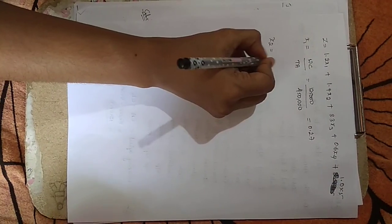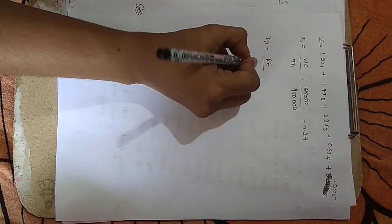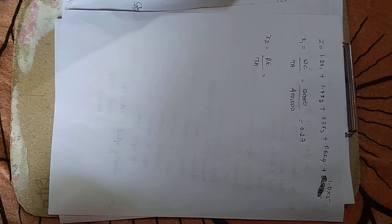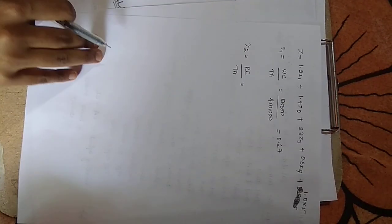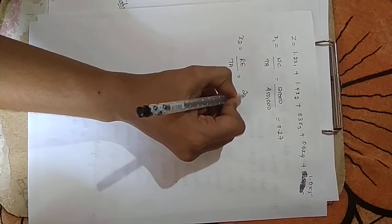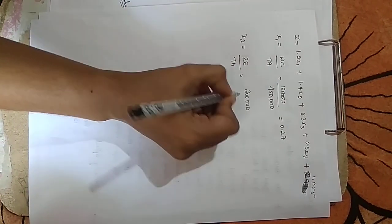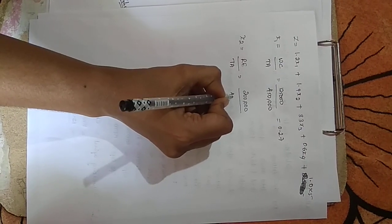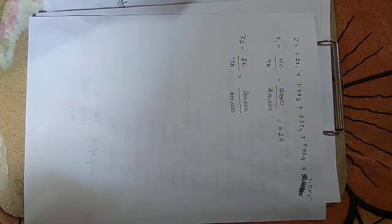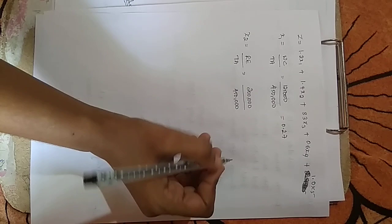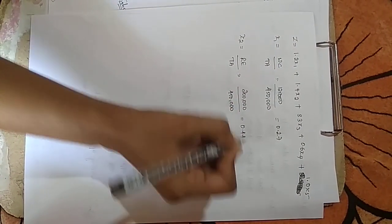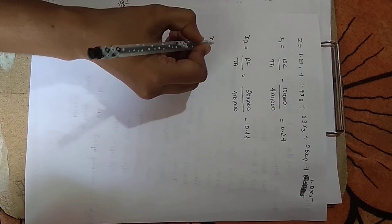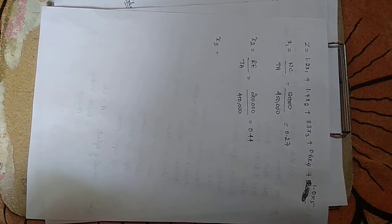Next, X2 is retained earnings divided by total assets. Retained earnings are 2,00,000 and total assets is 4,50,000. So 2,00,000 divided by 4,50,000 gives an answer of 0.44.